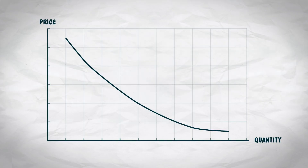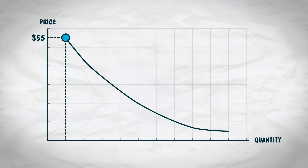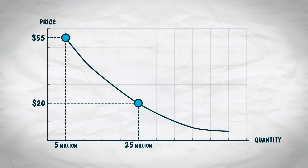Now let's discuss the two ways to read a demand curve. We'll start with the horizontal method. We begin by reading the price, say $55 per barrel, then read horizontally over to the demand curve and then down to find that at that price, buyers are willing and able to purchase 5 million barrels of oil per day. At a price of $20 per barrel, buyers are willing and able to purchase 25 million barrels of oil. At a price of $5 per barrel, buyers are willing and able to purchase 50 million barrels of oil.